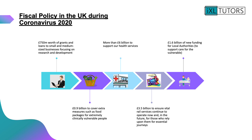During 2020 we have seen lots of different fiscal policy measures put into place. For example, £750 million worth of grants and loans are being given to small businesses to focus on research and development, and £0.9 billion to cover extra measures such as food packages for extremely clinically vulnerable people. These are just some examples of fiscal policies that the UK government are putting into place.